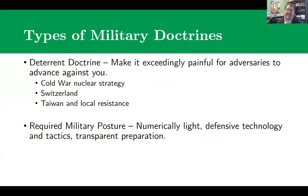A deterrent doctrine is about making it exceedingly painful for an adversary to advance against you — the whole point of your military is to inflict pain to prevent conflict from ever happening. The classic example is during the Cold War, where the United States and the Soviet Union developed a mutually assured destruction dynamic: if the Soviet Union launched at the United States, the US would respond with full thermonuclear war and obliterate the Soviet Union — so devastating and cataclysmic that the Soviet Union would be deterred from taking that step. Likewise, the Soviet Union developed nuclear deterrence to prevent the United States from striking first.